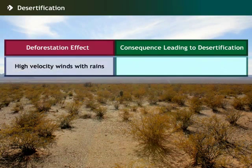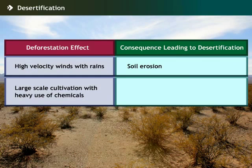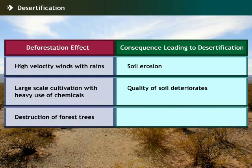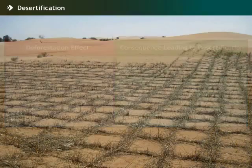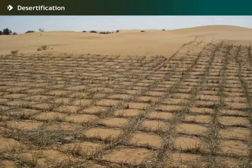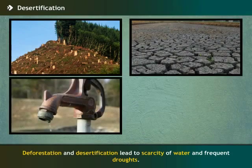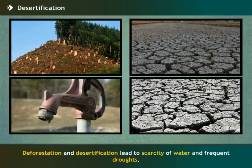Loss of forests causes high-velocity winds and heavy rainfall, leading to soil erosion. Extensive agriculture and use of chemicals adversely affect the quality of soil. Destruction of forests leads to reduced rainfall, which further leads to desertification. The soil loses its fertility and the quality of the land deteriorates. Deforestation and desertification lead to scarcity of water and frequent droughts.